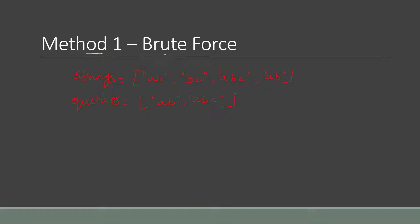The first method is the brute force approach. We have an array of strings containing four strings: AB, BC, ABC, and again AB. We also have a queries array containing two strings: AB and ABC. In the brute force approach, for every string in the queries array, we traverse the whole strings array once and find the count of that string in the strings array.